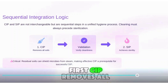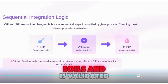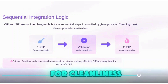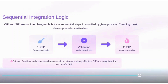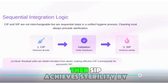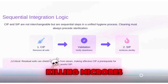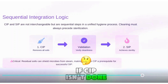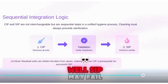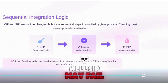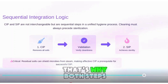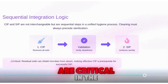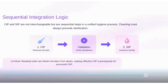First, CIP removes all soils and is validated for cleanliness. Then SIP achieves sterility by killing microbes. If CIP isn't done well, SIP may fail. That's why both steps are critical in the process chain.